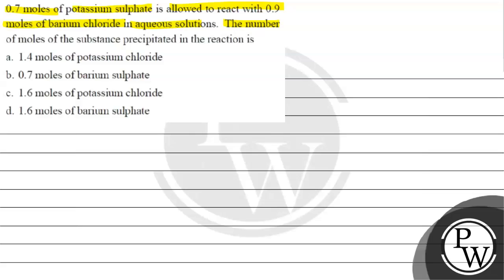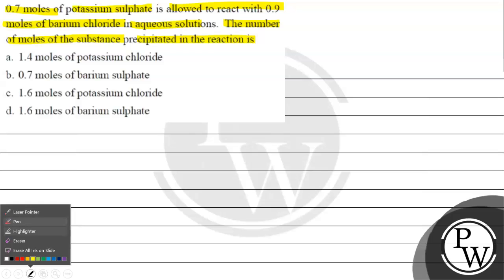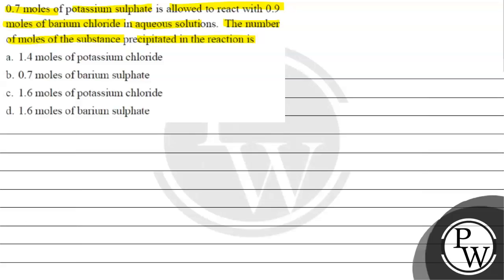The number of moles of the substance precipitated in the reaction is: option A, 1.4 moles of potassium chloride; option B, 0.7 moles of barium sulfate; option C, 1.6 moles of potassium chloride; option D, 1.6 moles of barium sulfate.